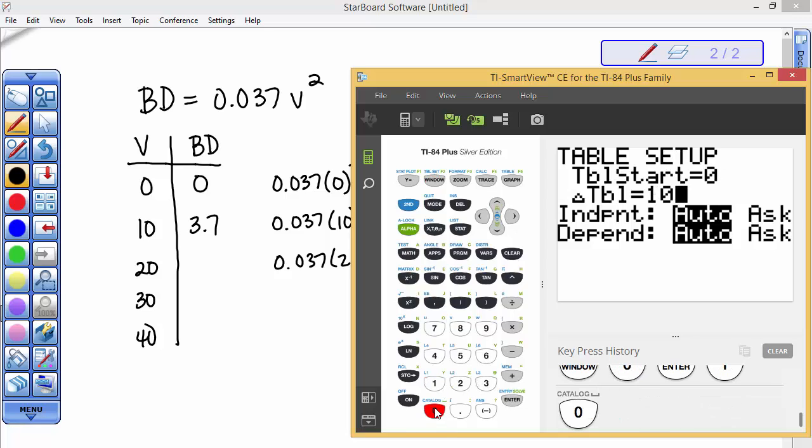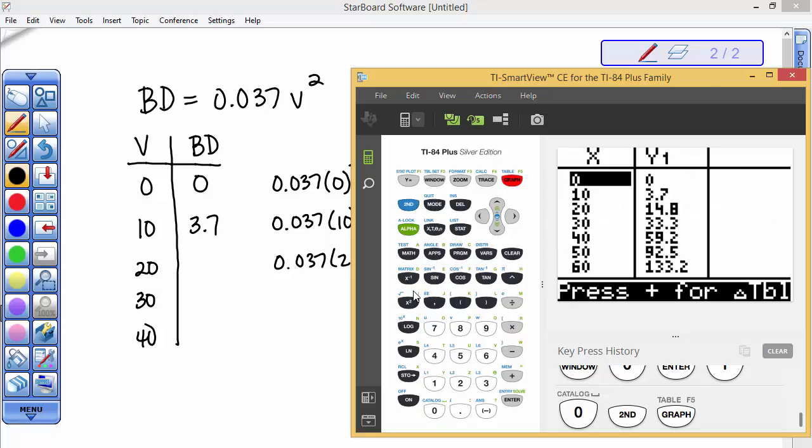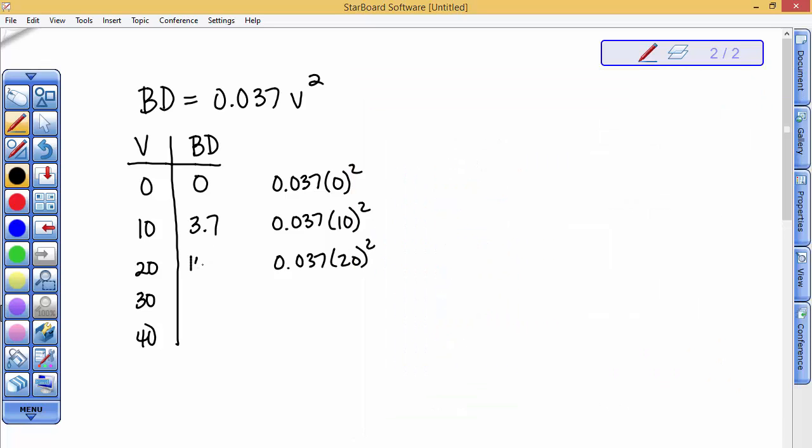I'm going to go second graph key to see the table. There's my first two numbers. I do have these jotted down. So I have 14.8 here at 20 miles, 33.3, 59.2, and at 50 miles per hour it would take you 92.5 feet the distance to stop.